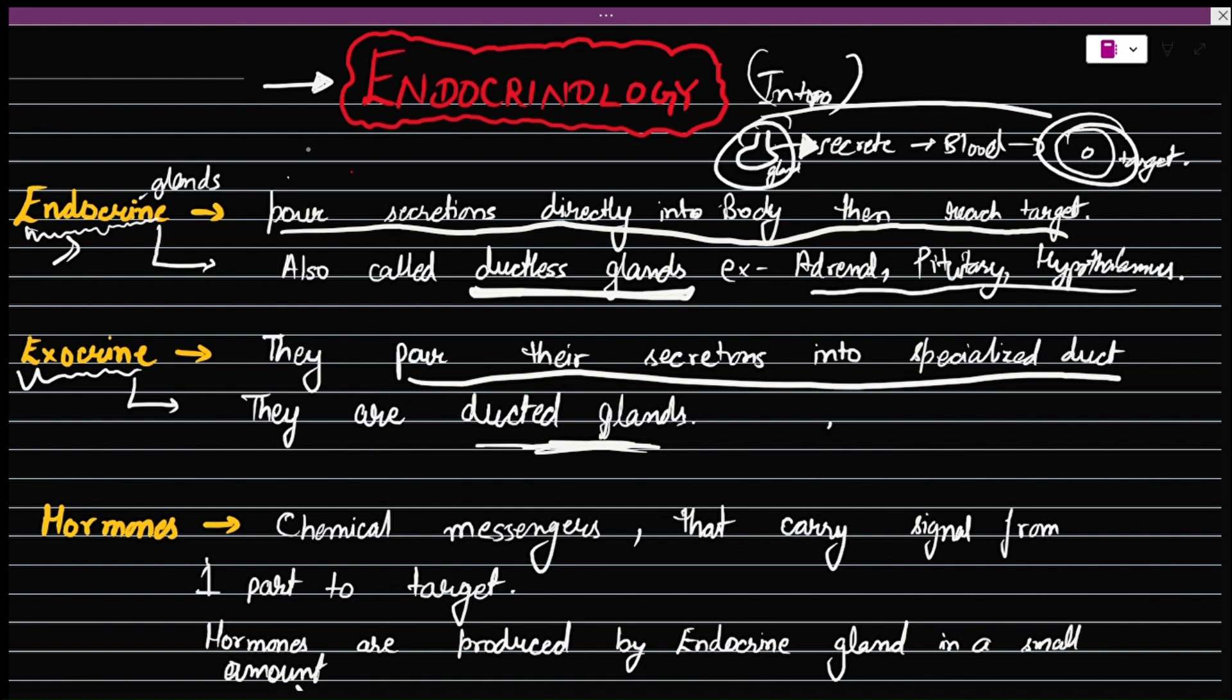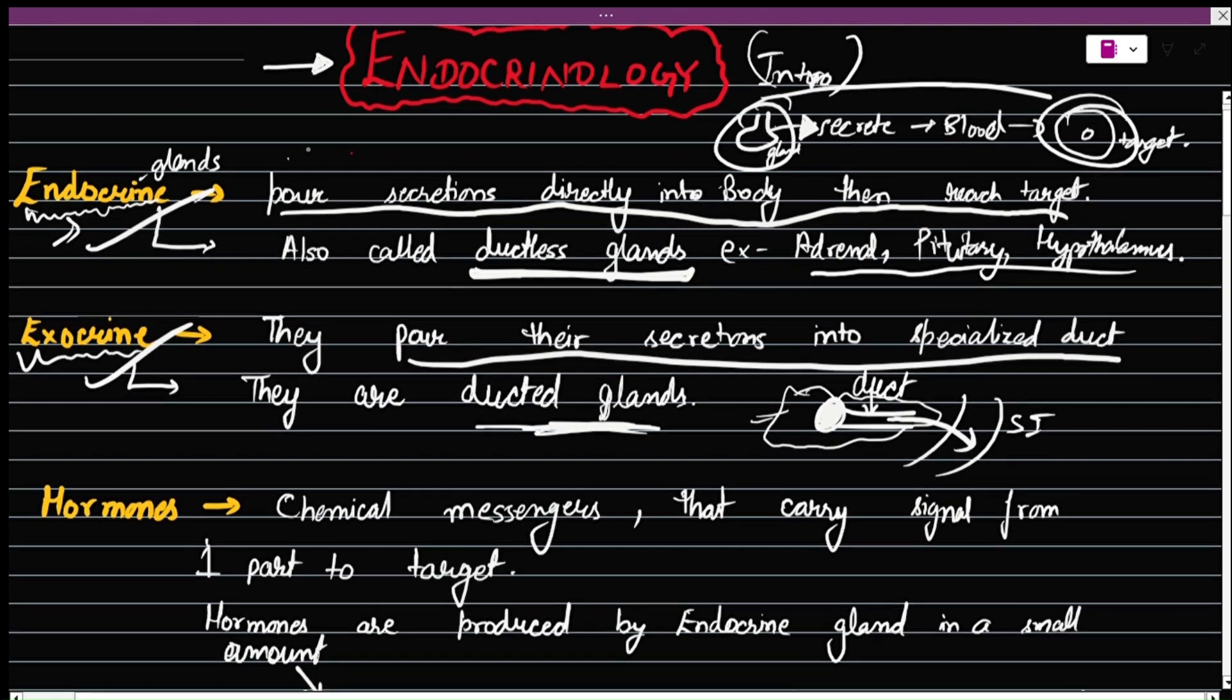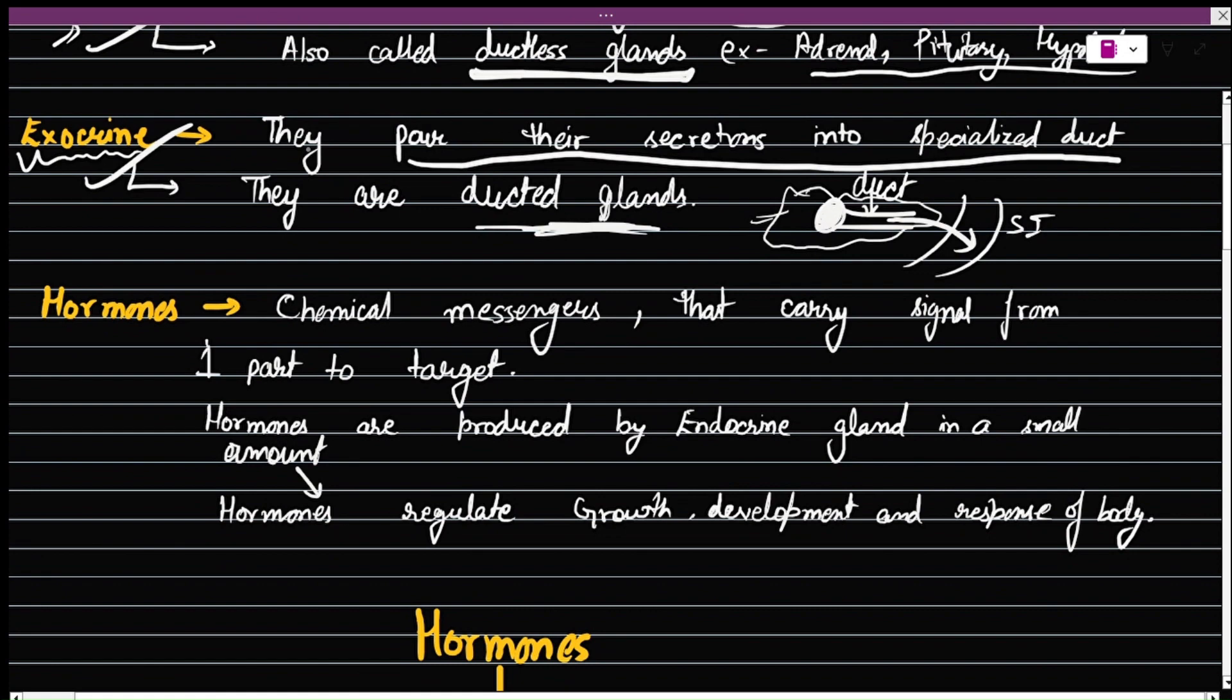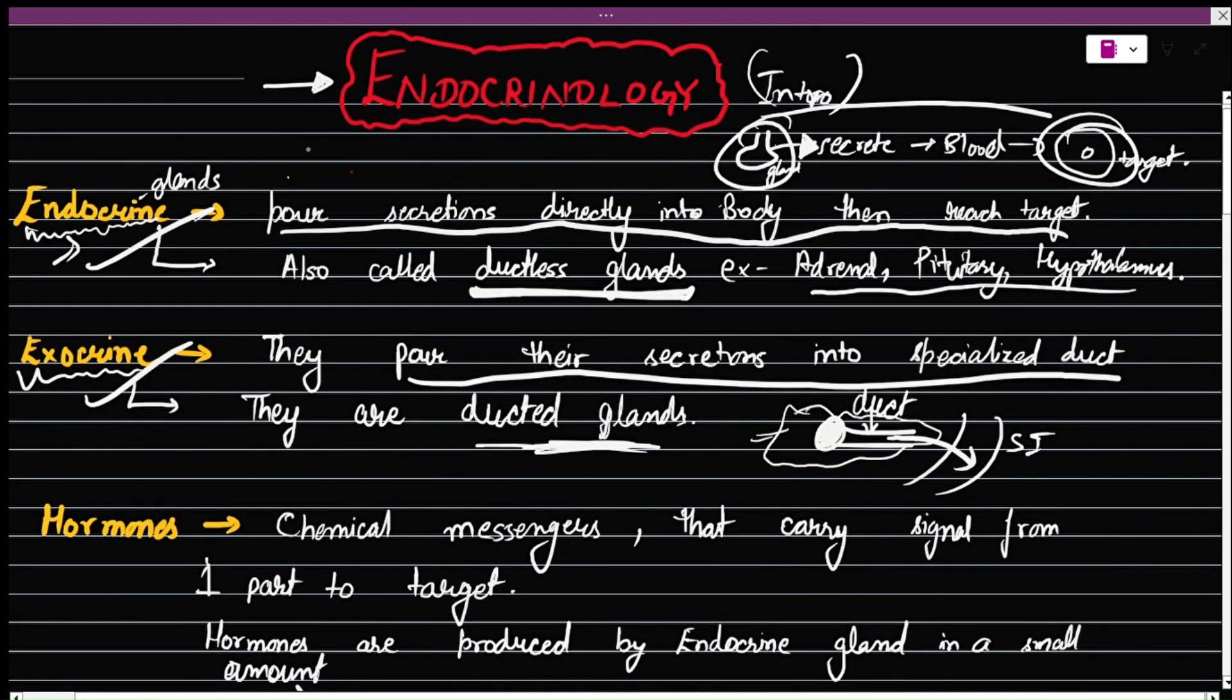So this will be the source, including a duct. Just like as you can see here, pancreas will have duct and from that duct, the secretion will go to small intestine. So here we can say it is a ducted gland, but this example is of heterocrine gland, which is a mixture of endocrine and exocrine. What we are studying basically is endocrinology.